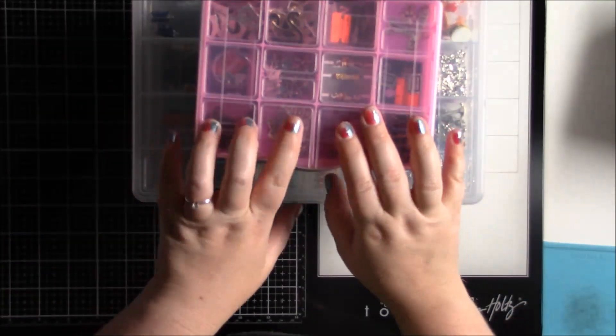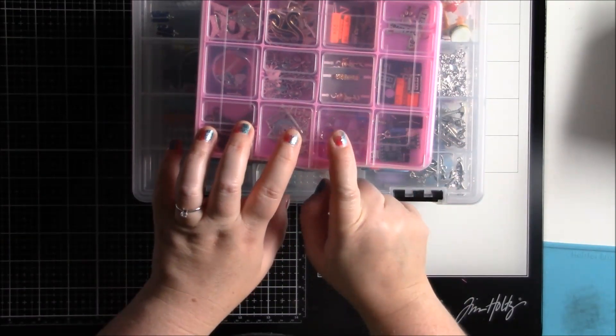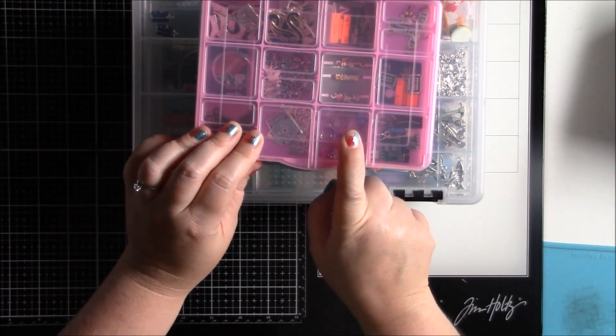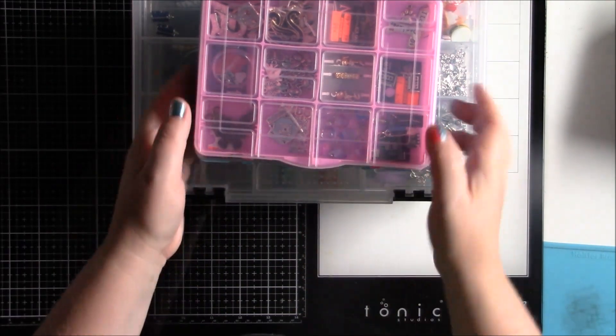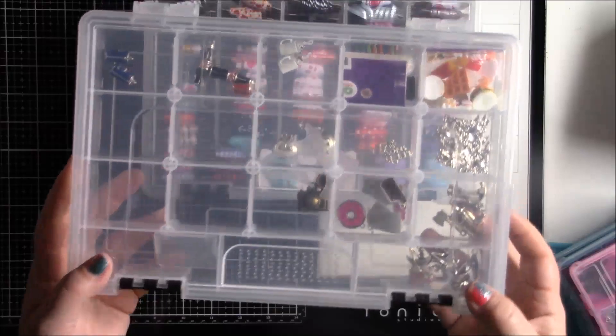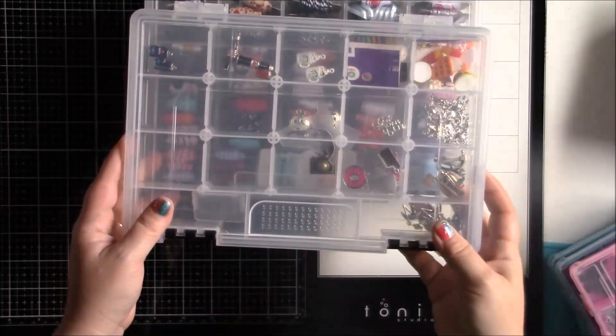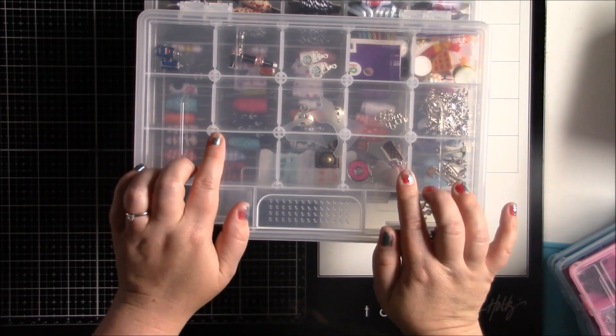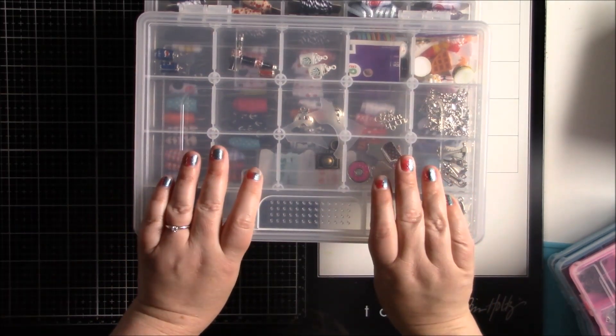So I did go ahead and start organizing now. I did get these for embellishment boxes, but I figured I could use these for storing my charms, because I was storing my charms in these containers from Home Depot. These are like Husky hardware storage containers, and actually my Home Depot doesn't even have them on their shelf right now, so I don't even know if they're going to carry them anymore.